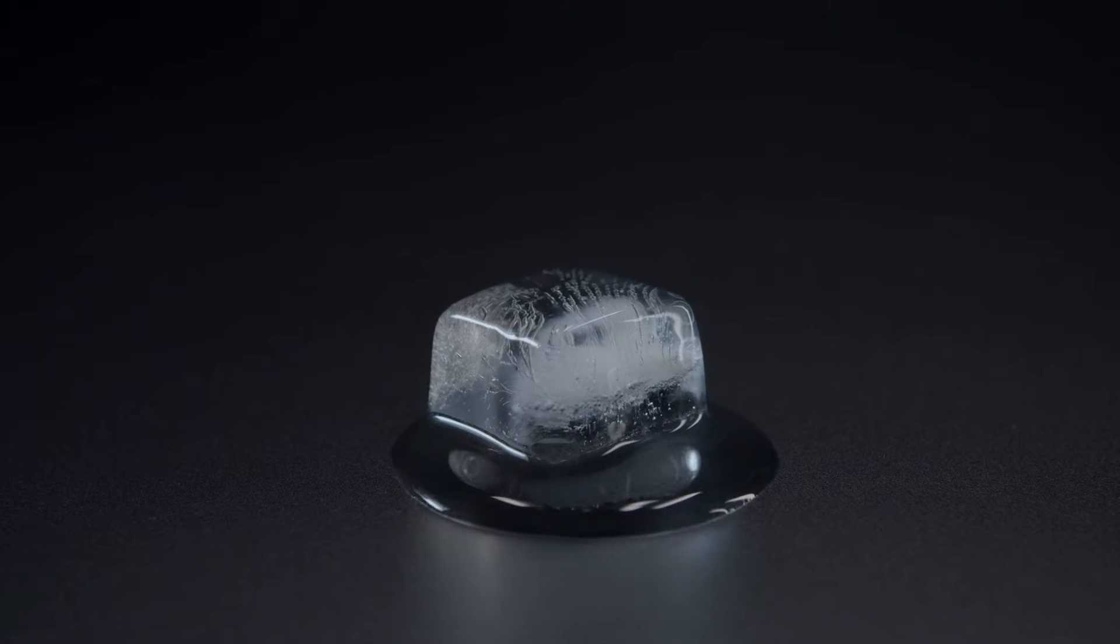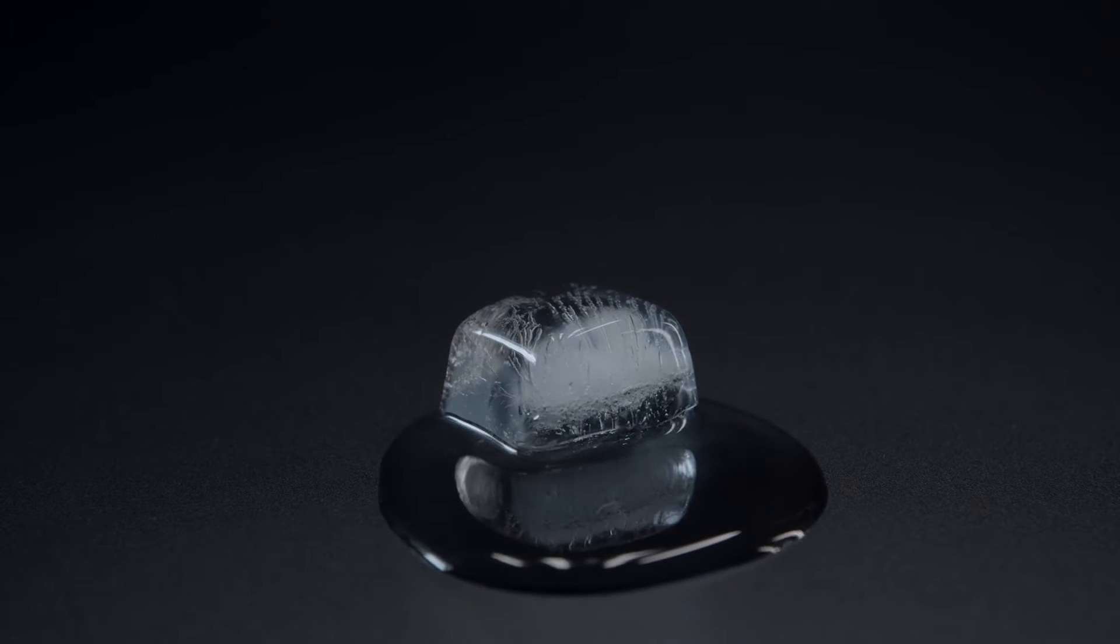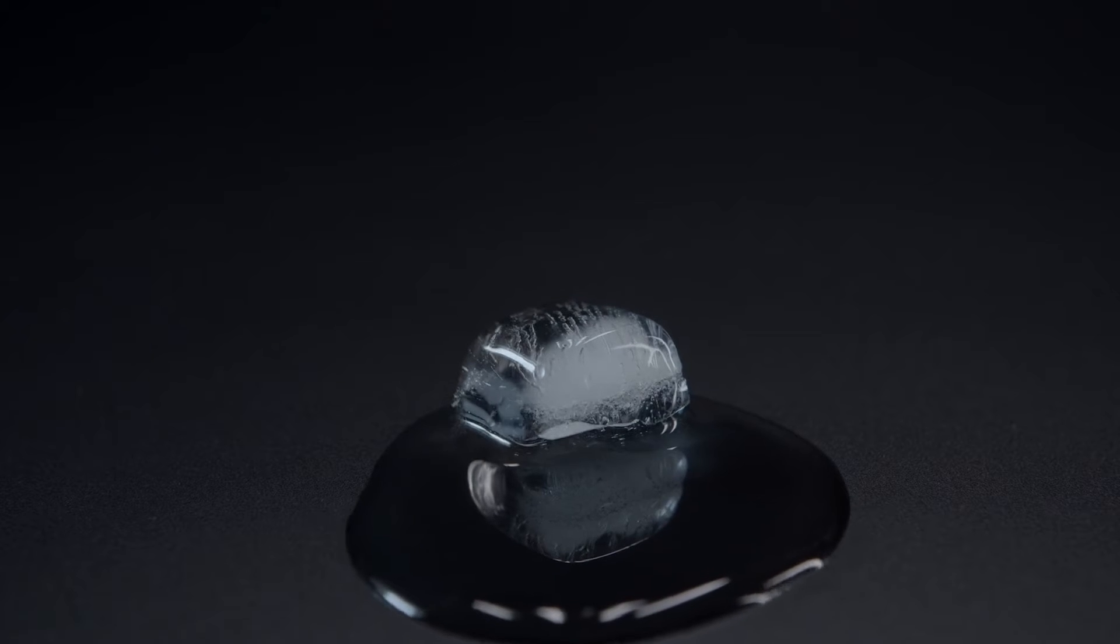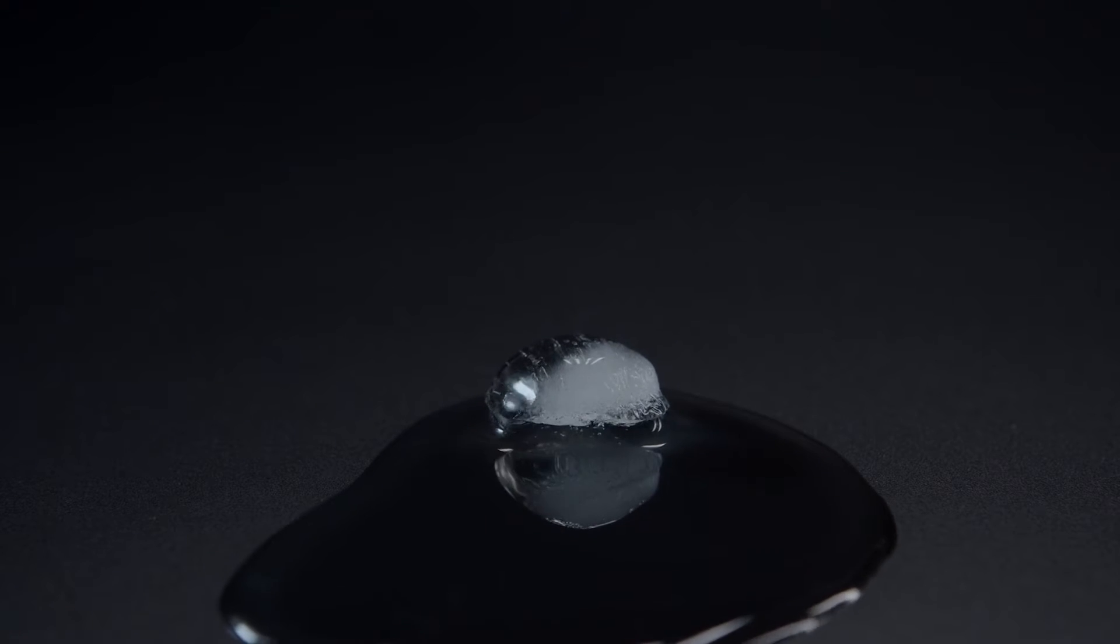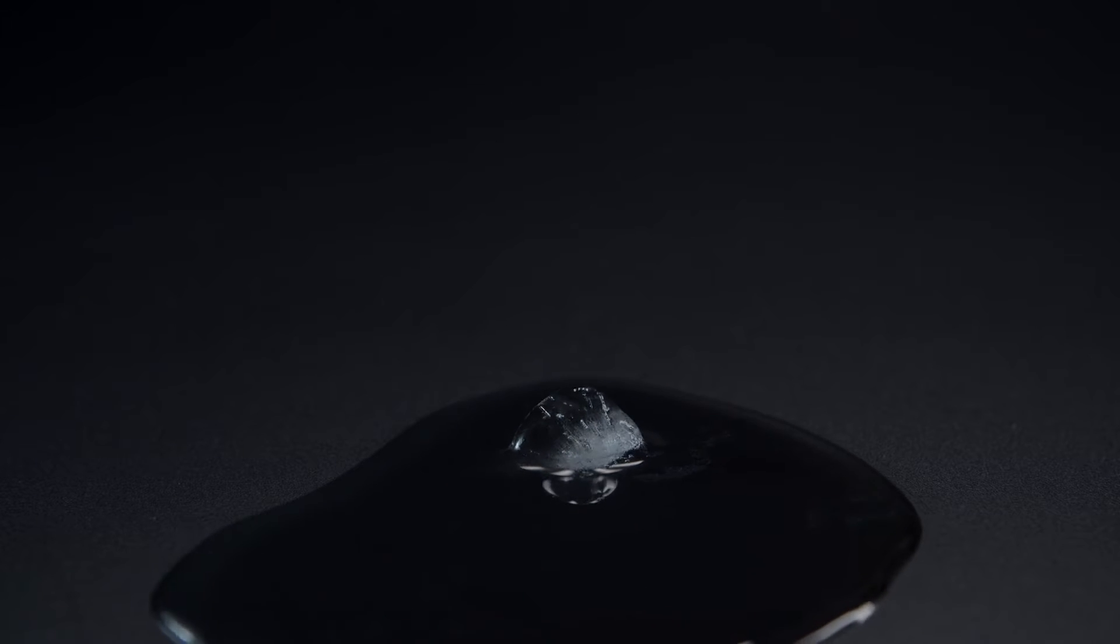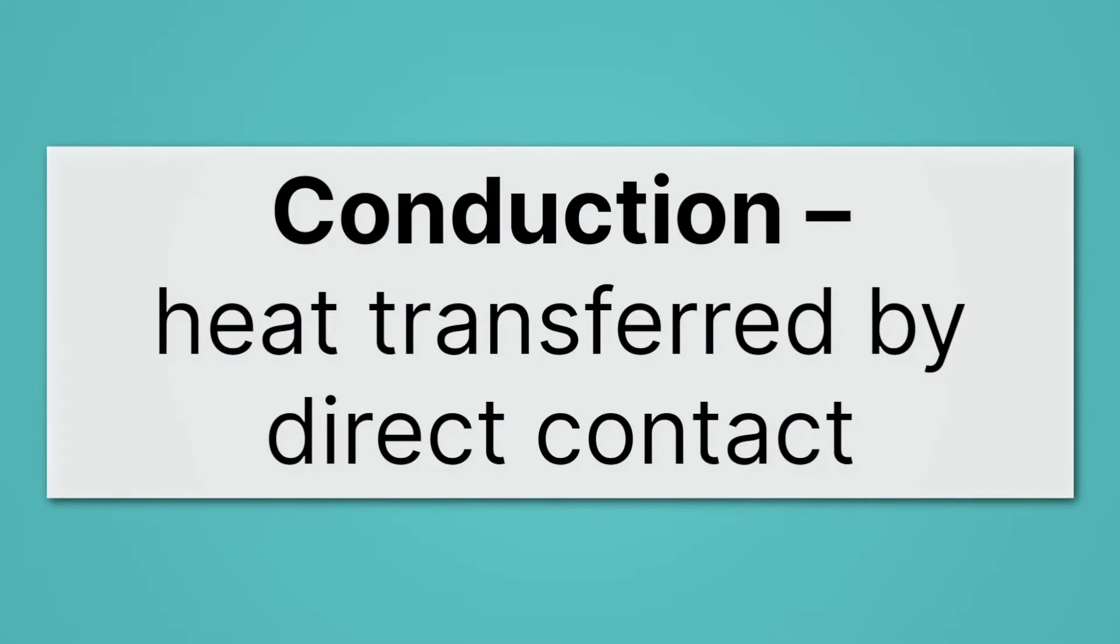Probably the most common way to think about heat transfer is shown here. The warm surface is transferring heat to the ice cube through direct contact. The surfaces are just directly touching each other. We call this sort of heat transfer conduction. Conduction is heat transferred by direct contact.